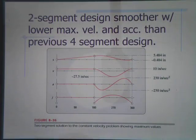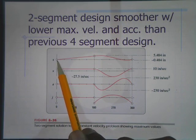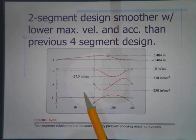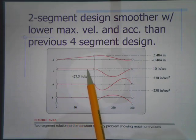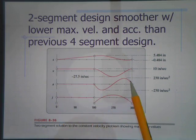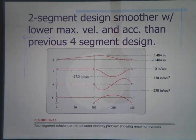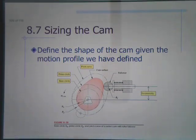The two-segment design is smoother with a lower maximum velocity and acceleration than the previous four-segment design. Position starts at zero, rises with a slope of 10 inches per second, then returns — ready to start again at zero. Velocity is constant at 10 in/s, then dips and returns. Acceleration starts and ends at zero. This is a preferred design. We are always trying to minimize both the number of boundary conditions per polynomial and the total number of polynomials in any cam design. Next, we will talk about sizing the cam.